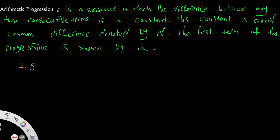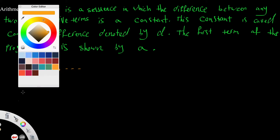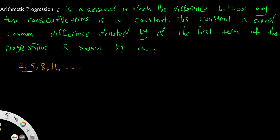For example: 2, 5, 8, 11, and so on. As you see here, the difference between 2 and 5 is 3, between 5 and 8 is 3, and between 8 and 11 is 3. Be careful — any two consecutive terms means terms coming right after each other. So this is the general definition of an Arithmetic Progression.